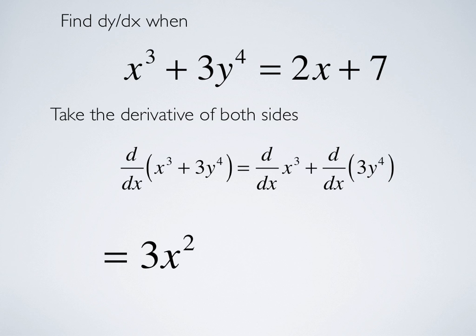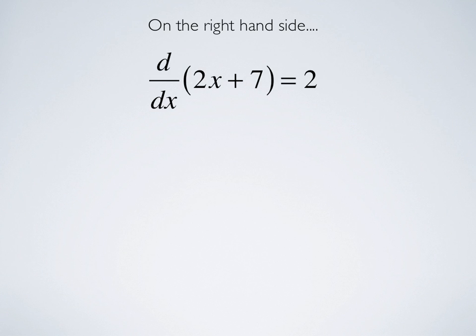And now, for the second term, which contains y, we need to use the chain rule. So, we have 12y cubed, and then we multiply by dy dx because of the chain rule. Now, on the right-hand side, we have d dx of 2x plus 7 equals 2.